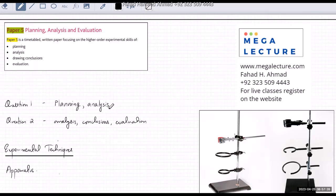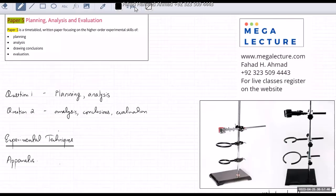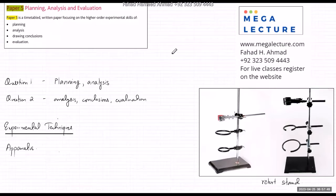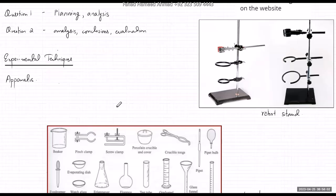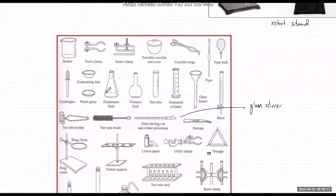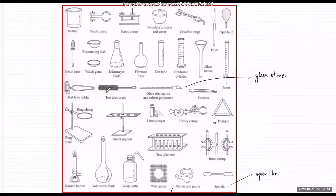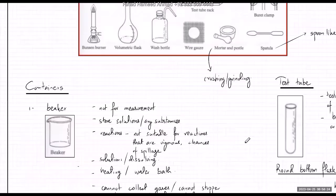For Paper 5 you should be familiar with your tools in the lab and all experimental procedures. We'll quickly go through all the common apparatus first, and you need to know things in a bit more detail about each one. We'll stick to the names that Cambridge uses and go through them very quickly.